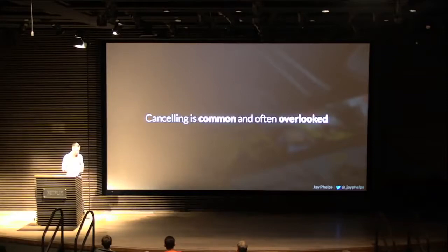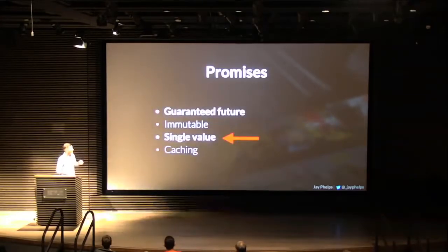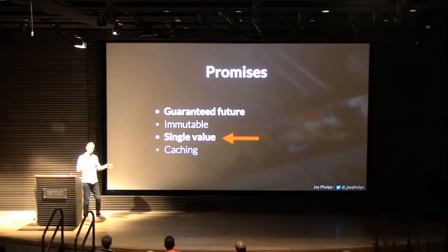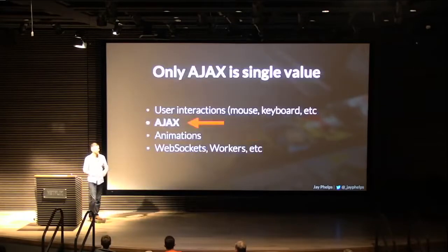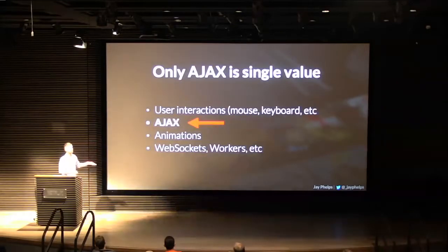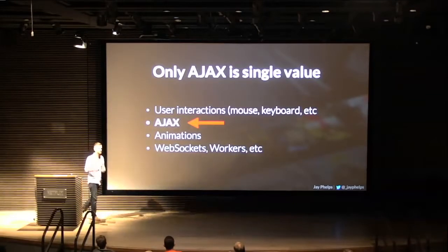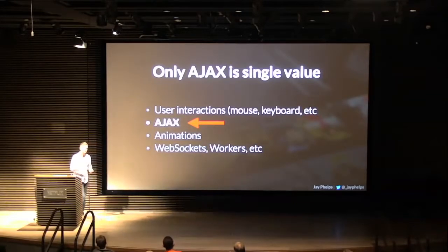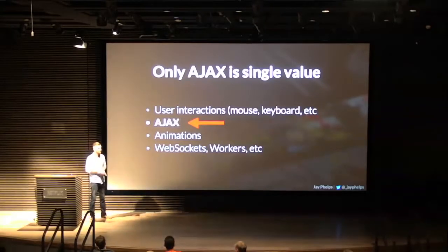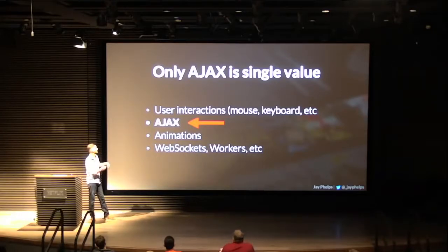Those obscure states are hard to diagnose — you get a support report describing a problem and you can't recreate it because it required a specific series of steps. So we need to fix that. The other issue with promises is the single value. Ajax is request-response — a single value — so it's not the end of the world for promises there, but there are many things people want to do that involve more than a single value, particularly around user interactions like debouncing and web sockets.